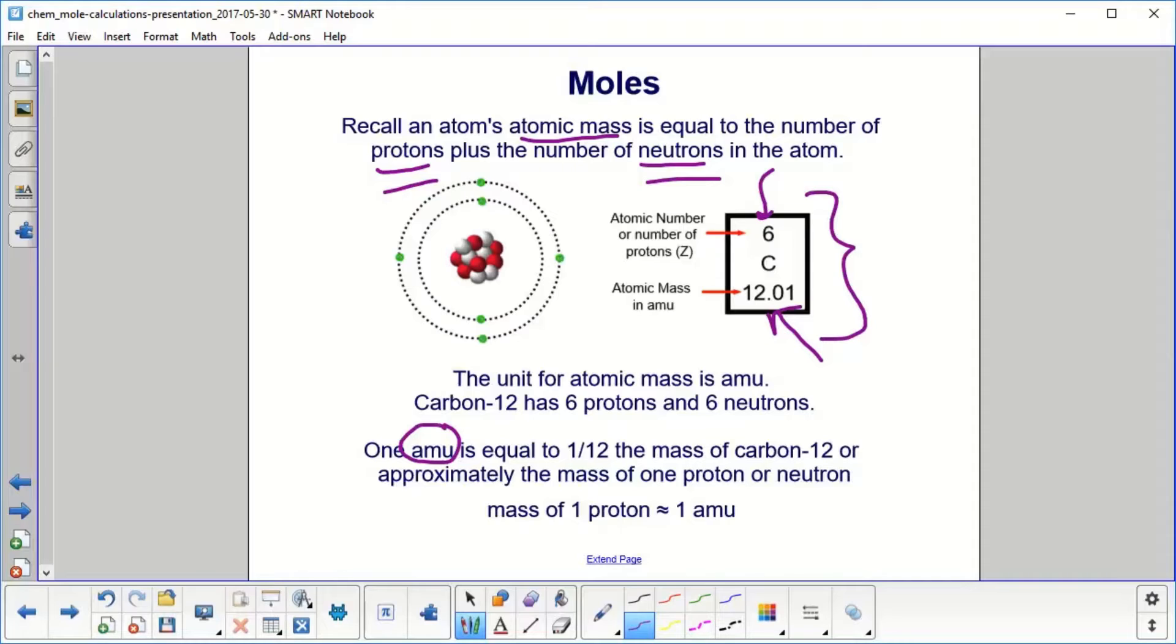Protons and neutrons actually have slightly different masses, and that's why this symbol here is not the equal sign. That's the approximately symbol.